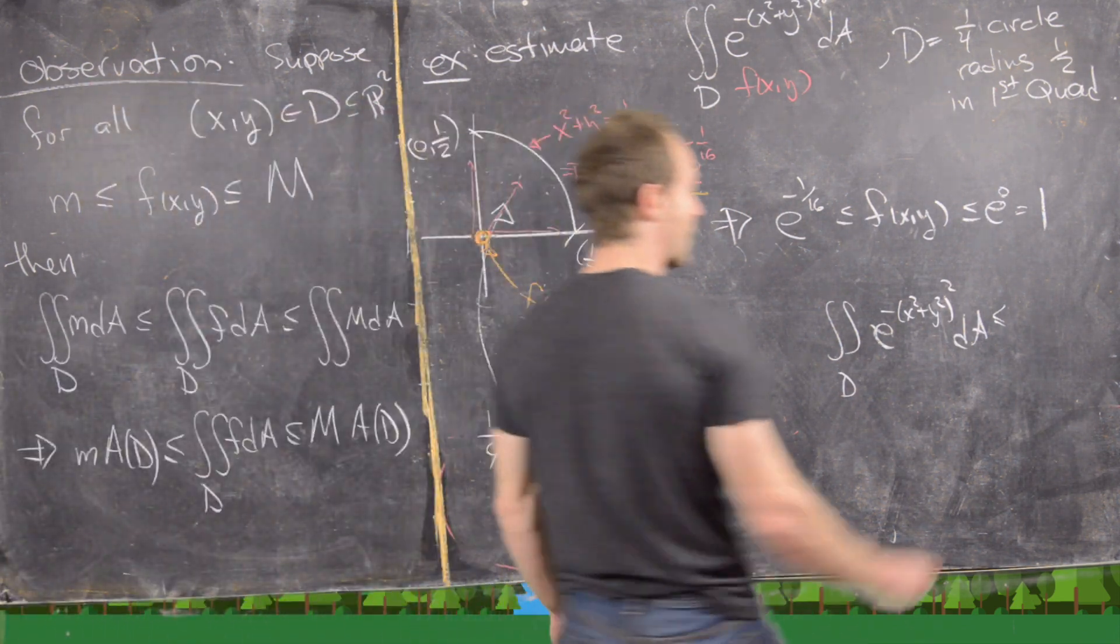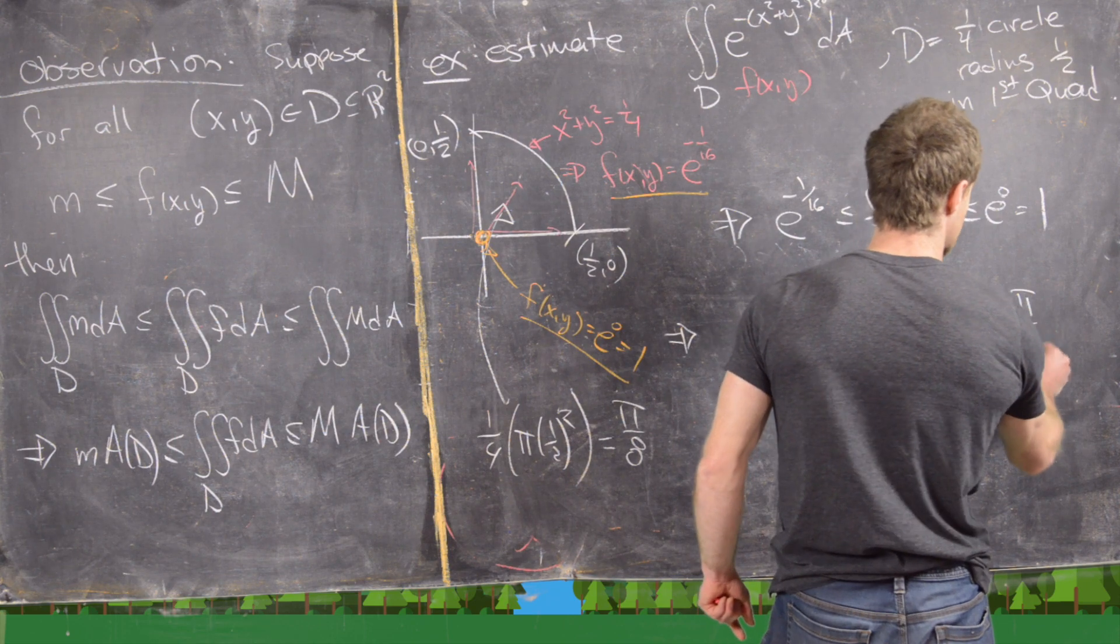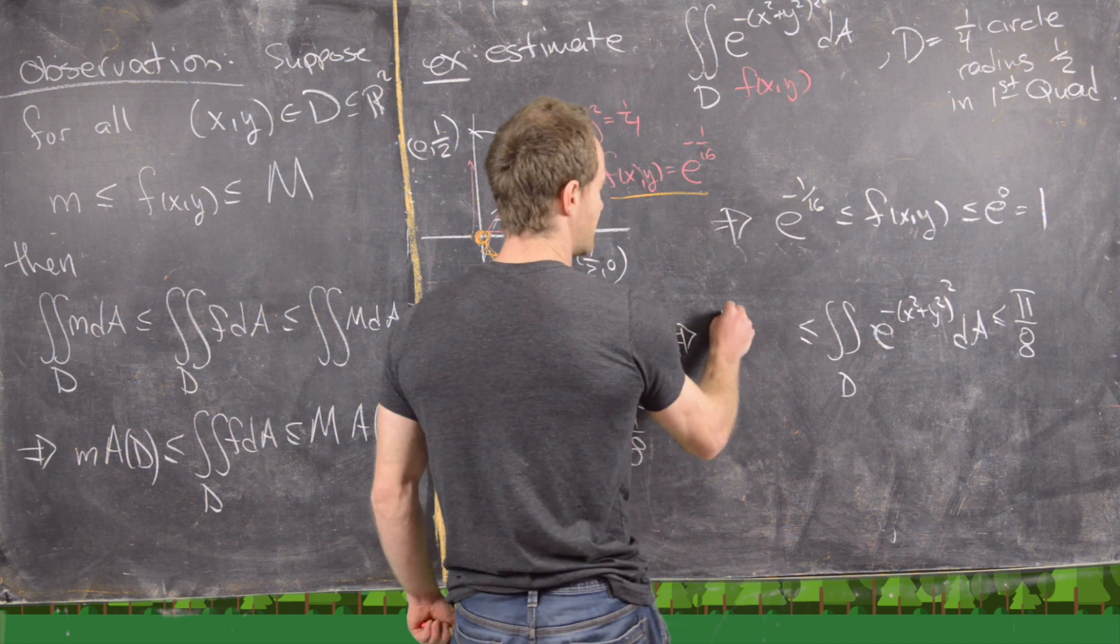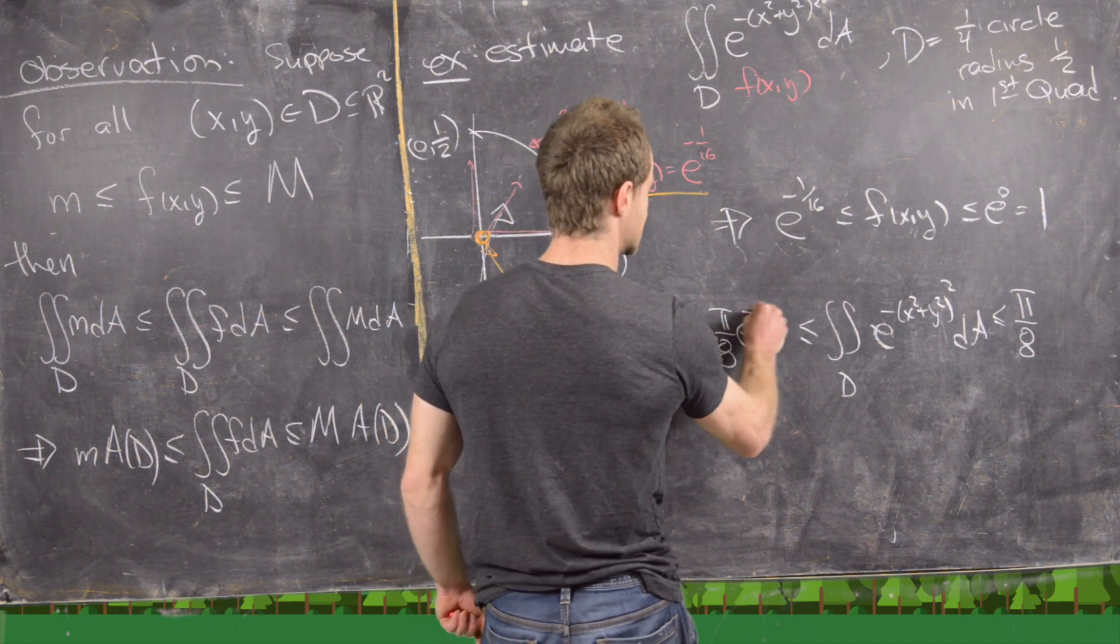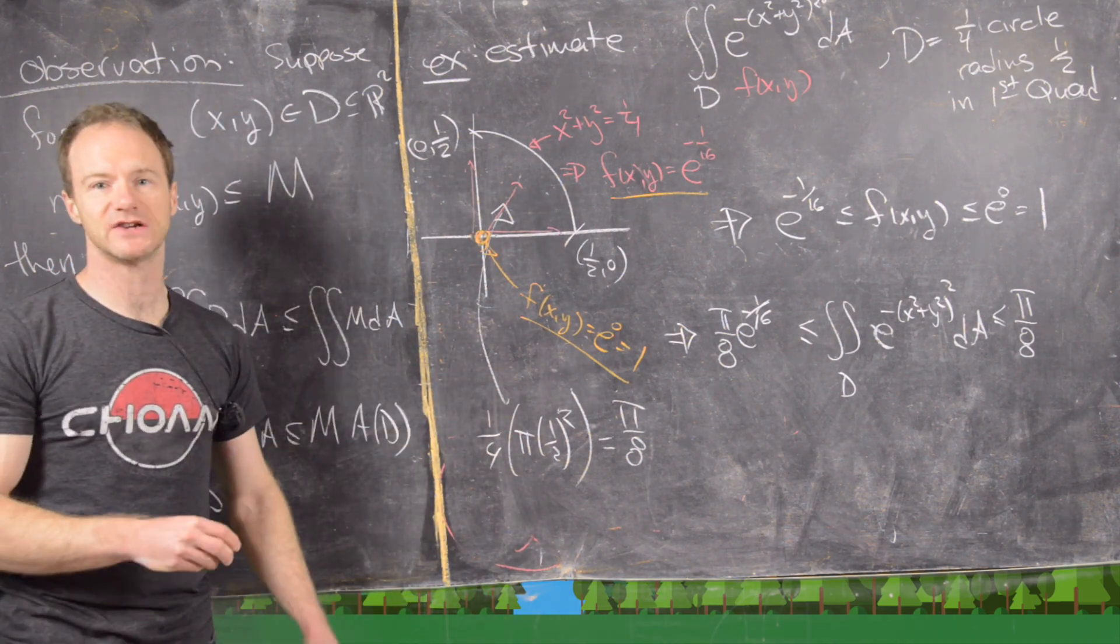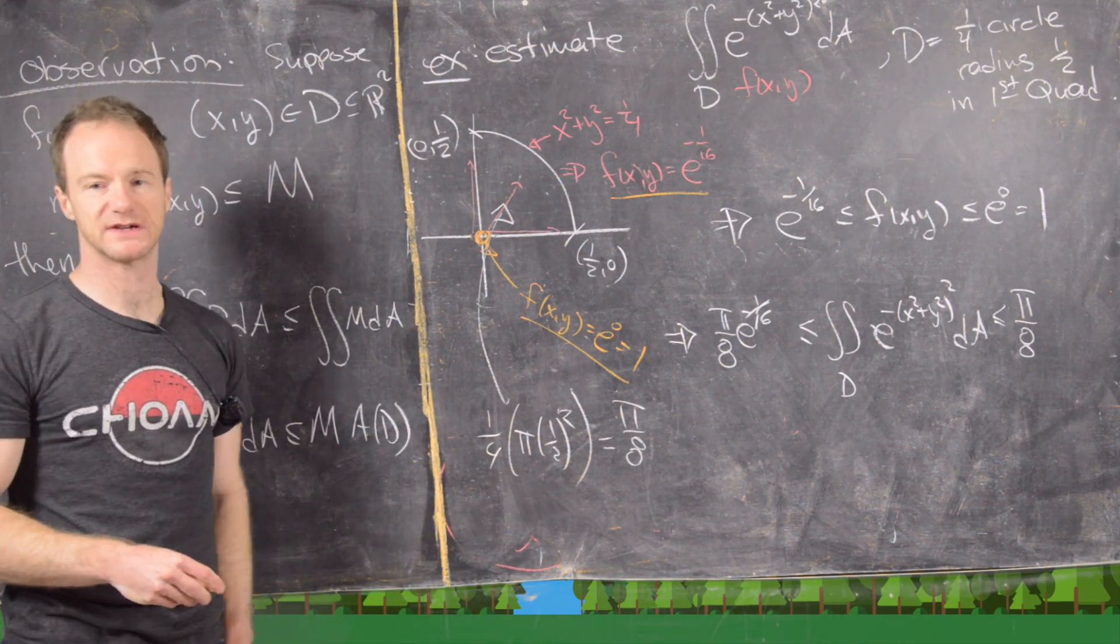So now that means it's bound above by π/8 times one. And then it's bound below by π/8 times e^(-1/16). So there we have an estimation of this double integral. It's a good place to stop.